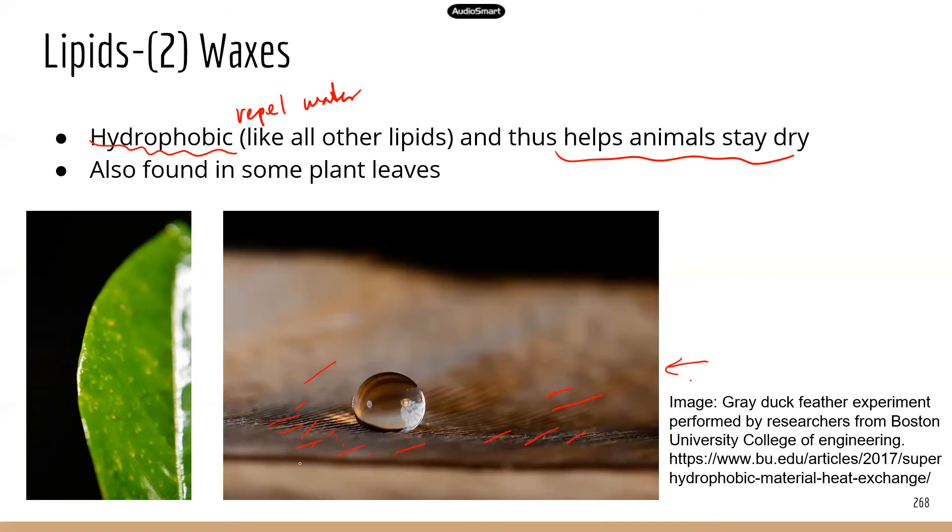So that's why it's important to have this wax layer on the feathers. And same thing for a lot of mammals as well. They have a little bit of wax layer on their fur so that they don't get very wet when they get into water.